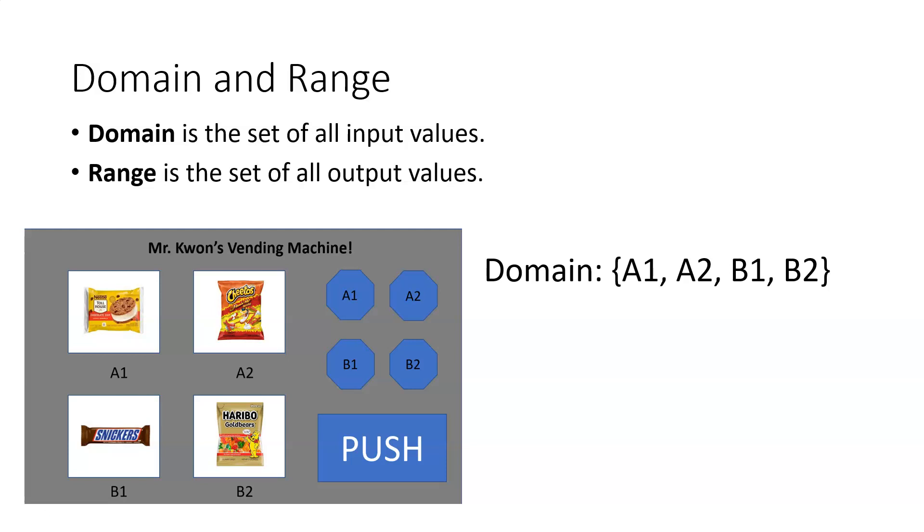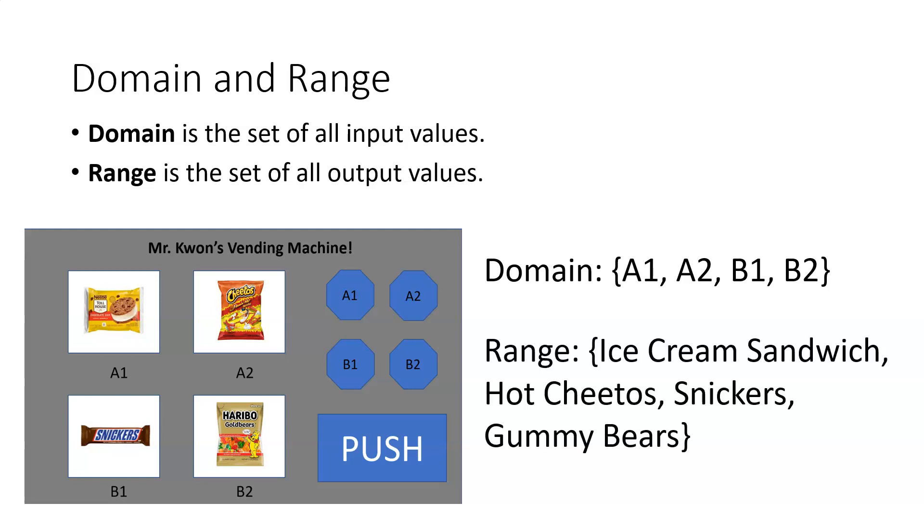And remember, here our outputs were the snacks that were being released from the vending machine. So our range is going to be just the list of the snacks, the ice cream sandwich, the hot Cheetos, the Snickers, and the gummy bears.